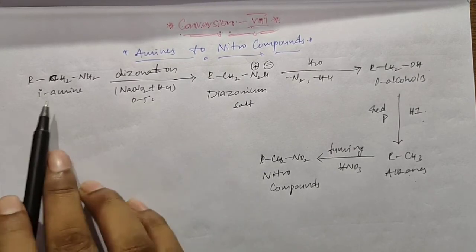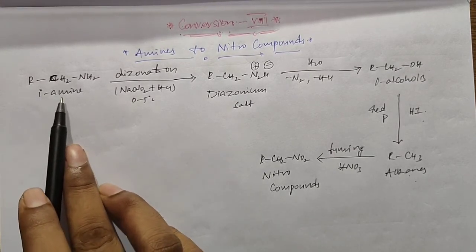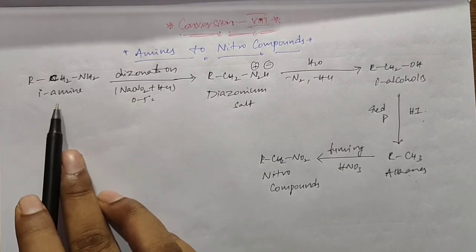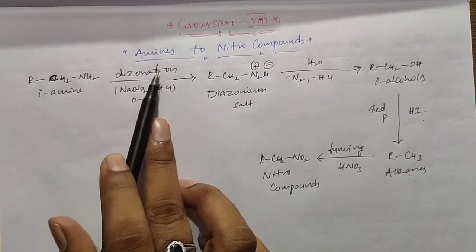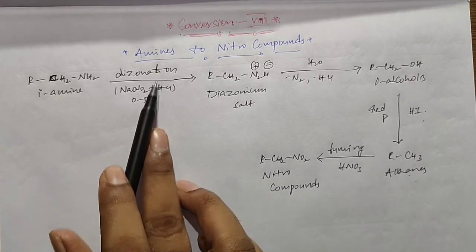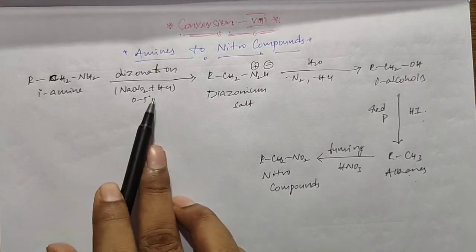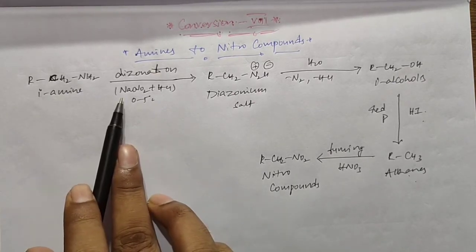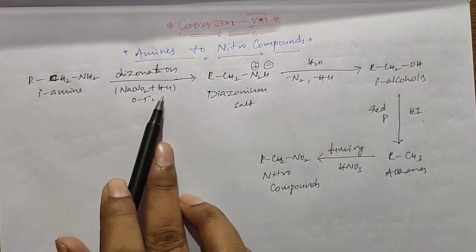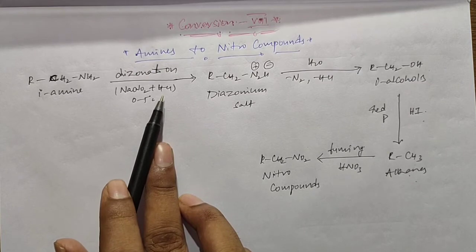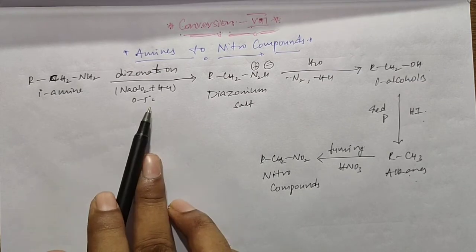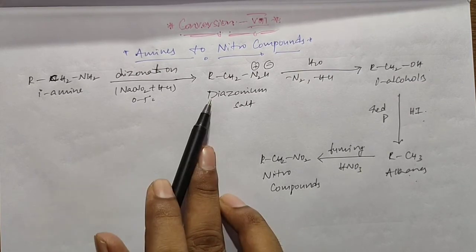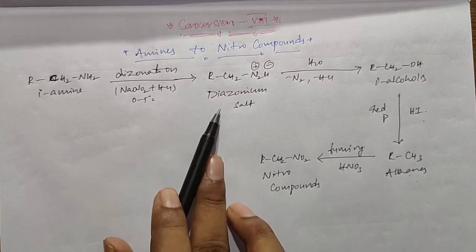To recap the process: we start with primary amines, which undergo diazotization with the diazotization mixture — NaNO2 and HCl — at 0 to 5 degrees centigrade to form the diazonium salt.